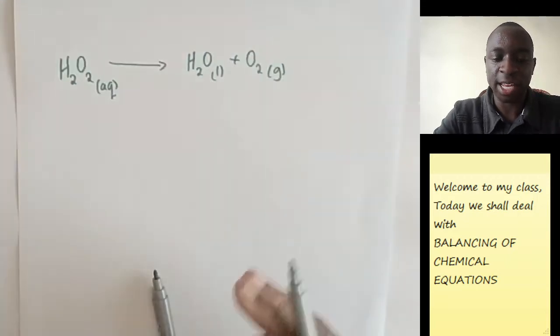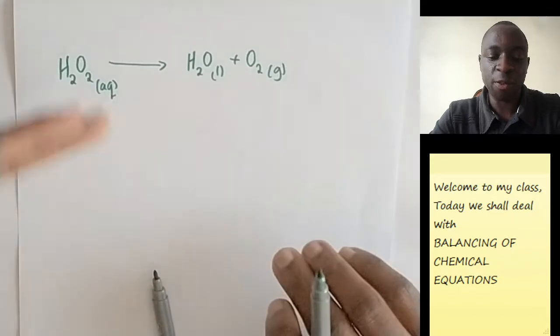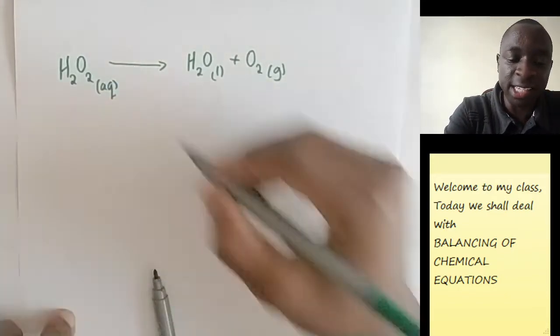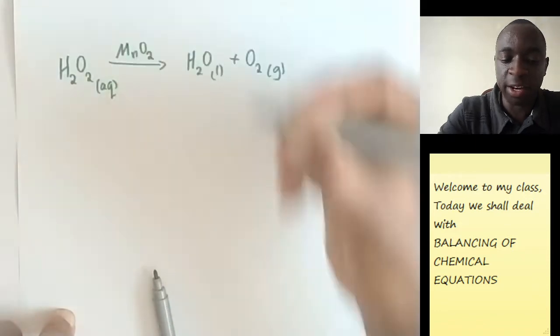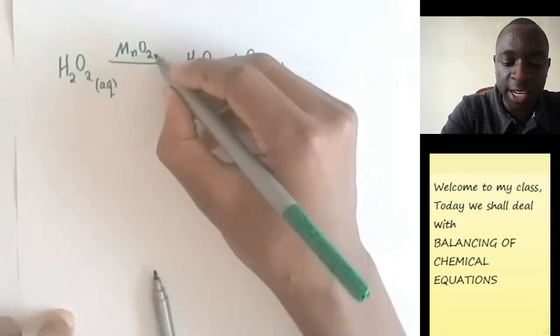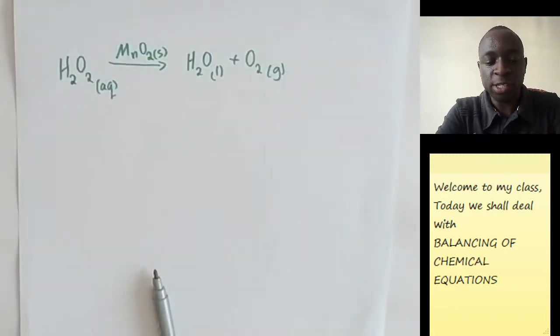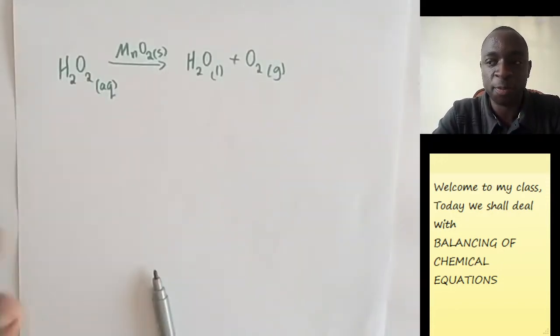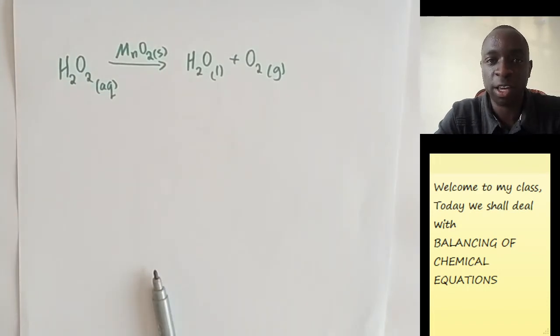We can see that hydrogen peroxide decomposes to give water and oxygen. Now this reaction usually takes place on its own, but if we added a catalyst, which is manganese-4-oxide, the reaction will take place very fast. So if we added manganese-4-oxide, it will catalyze the reaction. But you see, if you have manganese-4-oxide as a catalyst, it does not take part in the reaction. And therefore, we shall not handle it when you're dealing with the balancing of the equation.